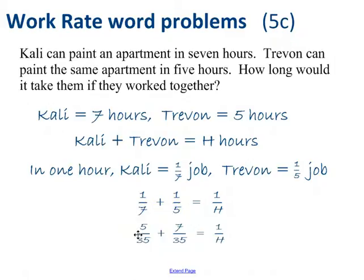So we can change these fractions to five over thirty-five plus seven over thirty-five equals that same thing here, one over H. Alright, put the five and the seven together, we realize one over H is equal to twelve over thirty-five. Well, I don't want one over H, I want H. I've got to flip this. So that means H is thirty-five over twelve.